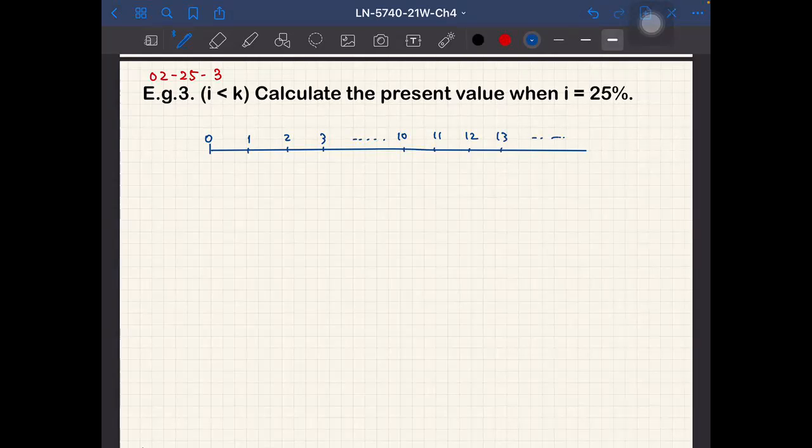And the cash flow is $1 times 1, and $2 times 2, and $2 times 3, and so on.